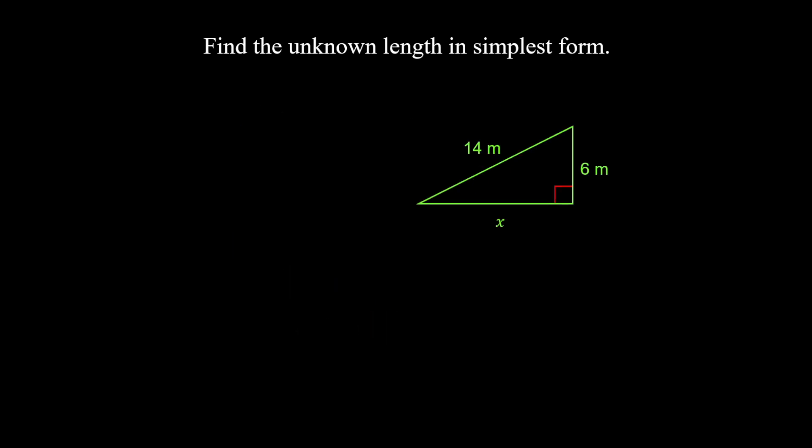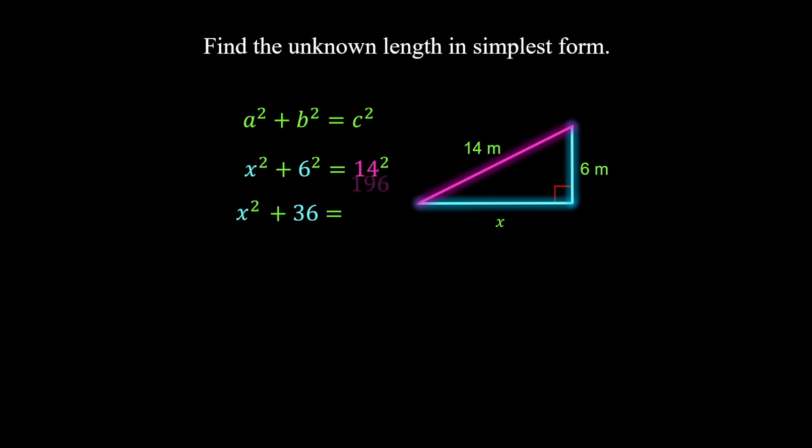Here's another example. Using the Pythagorean theorem, replace x for a, 6 for b, since they represent the legs of the right triangle. Then substitute 14 for c, since it is the hypotenuse of the triangle. Evaluating powers, x squared plus 6 squared is 36 equals 14 squared is 196.